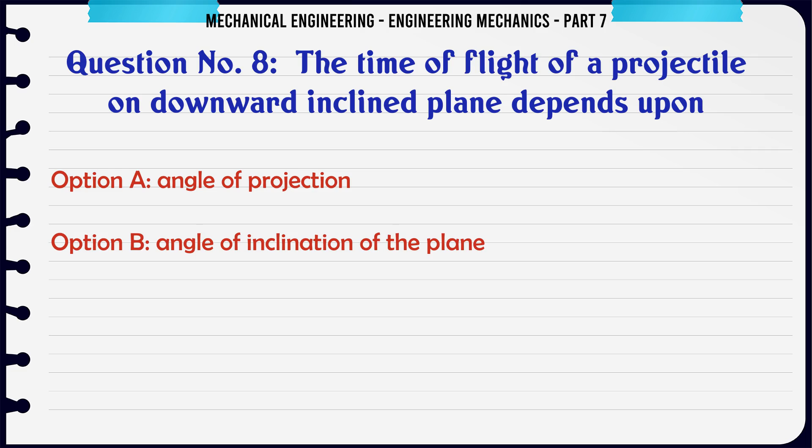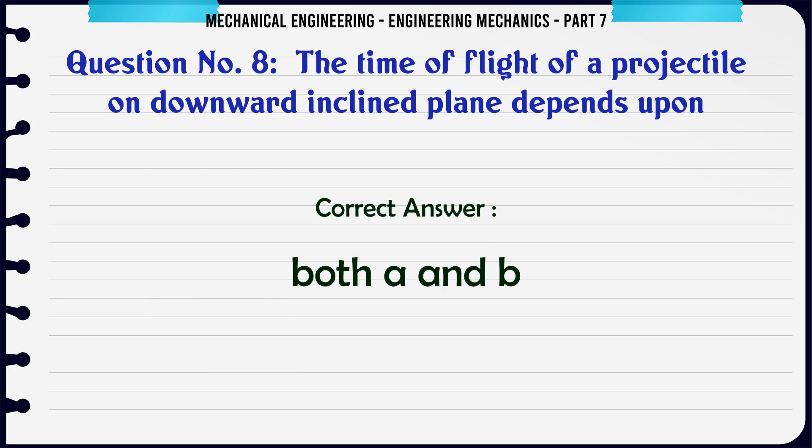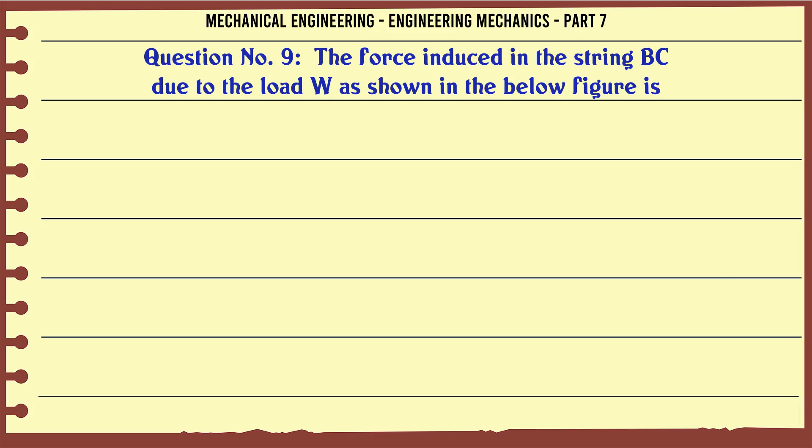The time of flight of a projectile on downward inclined plane depends upon: Option A: Angle of projection, Option B: Angle of inclination of the plane, Option C: Both A and B, Option D: None of these. The correct answer is Both A and B.